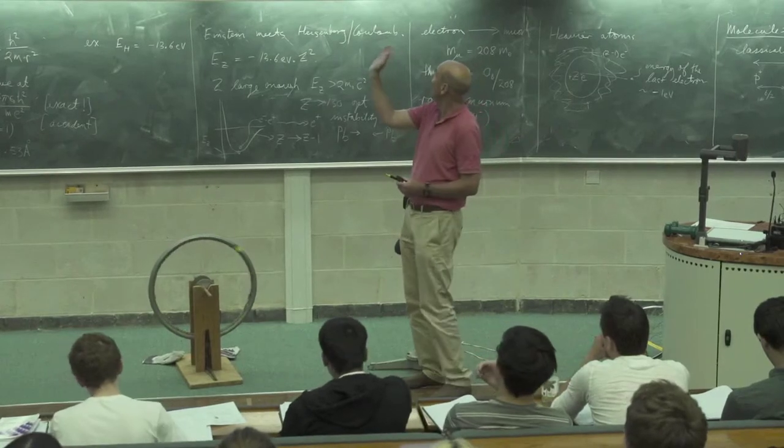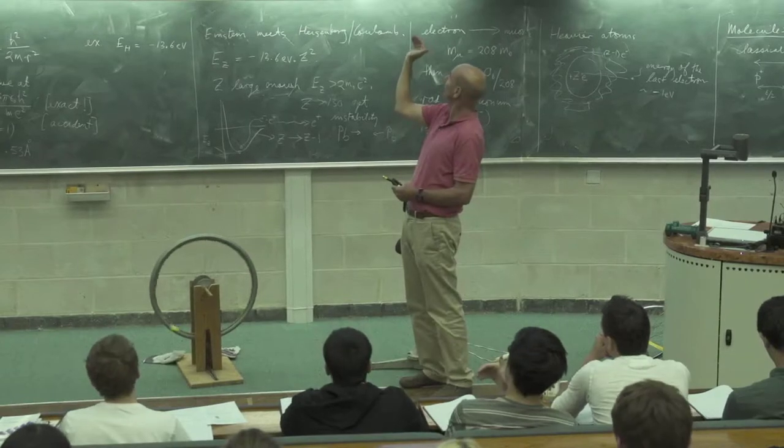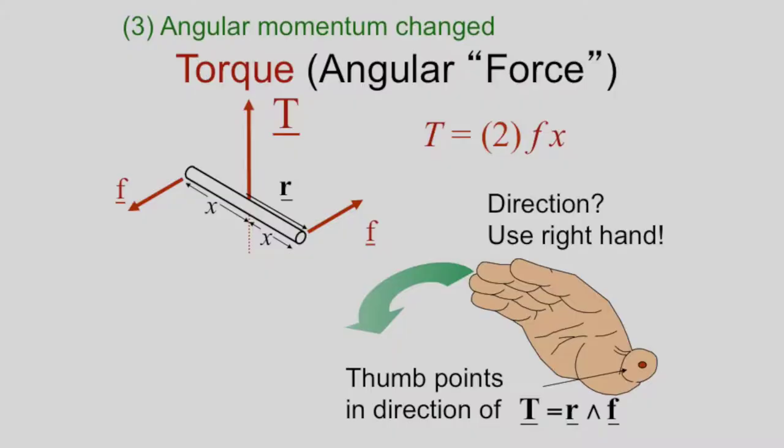So R down towards this end of the rod, curled around in the direction of F, and your right thumb points in the direction of T.